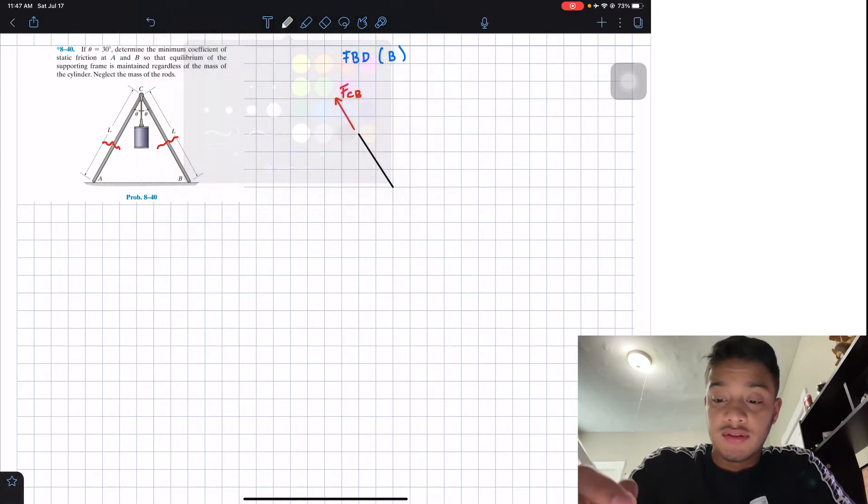Now, this rod, with respect to the y-axis, has an angle theta that they're giving to us. So let's write it over here, theta equals to 30 degrees.